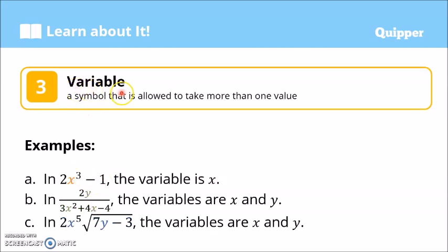Those that can change are called variables — from the word 'vary,' meaning it changes. A variable is a symbol that is allowed to take more than one value. For example, in 2x³ − 1, the variable is x, which represents numbers — it could be 1, 2, 3, 4, and so on. In example b, 2y over 3x² + 4x − 4, the variables are y and x.